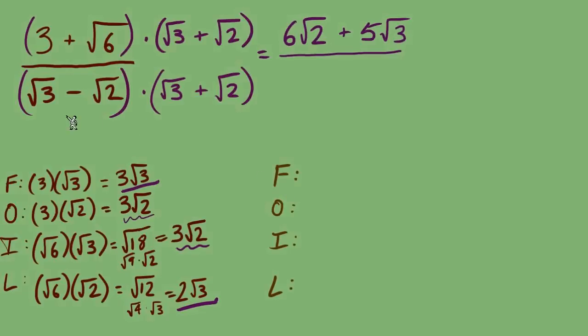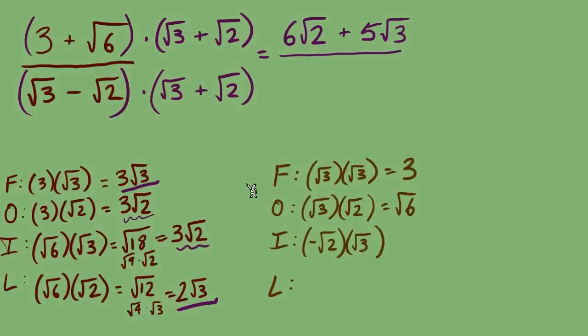First: radical 3 times radical 3 is 3. Outer: radical 3 times radical 2 is radical 6. Inner: negative radical 2, be cautious there. Negative radical 2 times radical 3. Negative radical 6, there are those opposites.